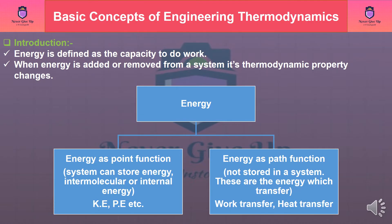Energy is defined as the capacity to do work. When energy is added or removed from a system, its thermodynamic property changes. Energy can be classified into two parts.